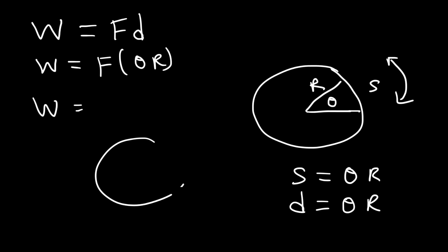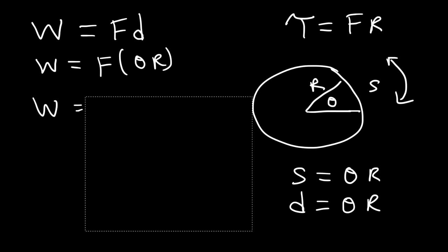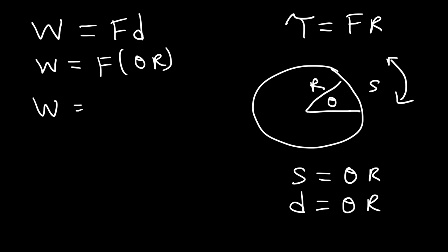Now, if we apply a force on a circle or on a wheel, the radius of the circle becomes the moment arm or the lever arm. So therefore, the torque is the force times the moment arm — in this case, the force times the radius of the circle. So therefore, we can replace F times R with torque. Rotational work is equal to the torque times the angular displacement.